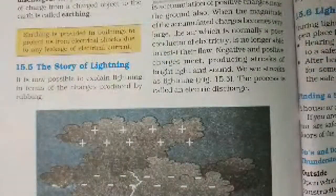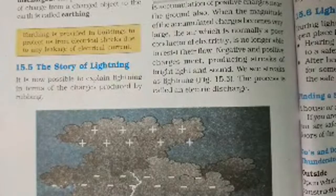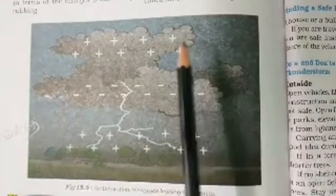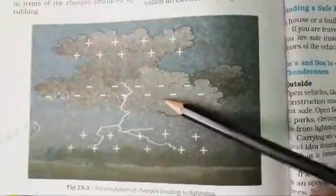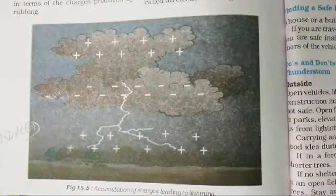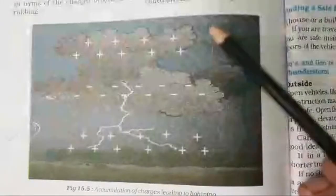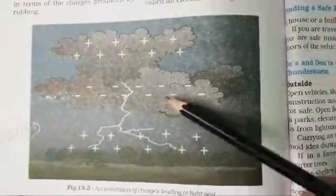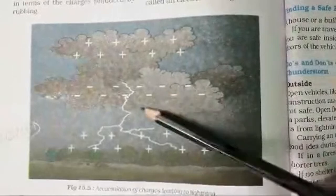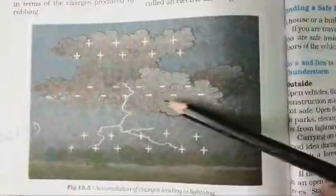Earthing is useful in understanding the story of lightning. Whenever a cloud is formed, the upper end of the cloud carries positive charge and the lower side carries negative charge. This happens because clouds contain many drops of water — heavier drops tend to acquire negative charge and lighter drops acquire positive charge, so the lower end of the cloud acquires negative charge.